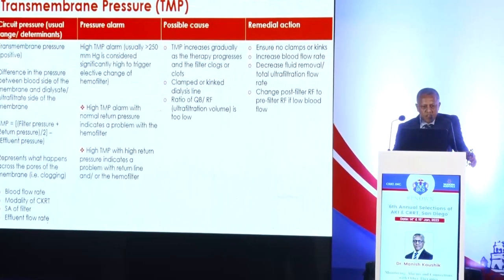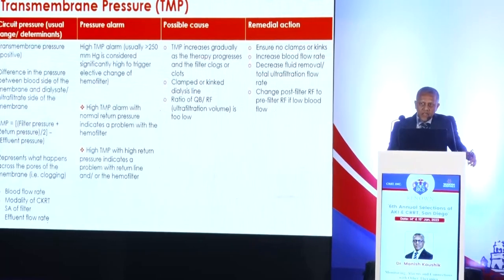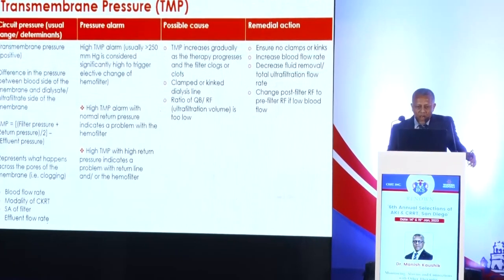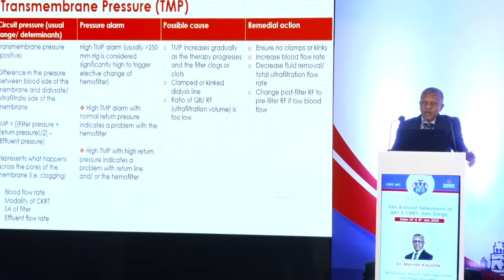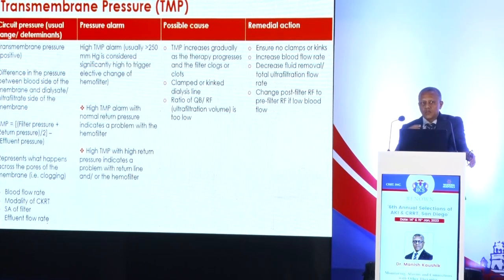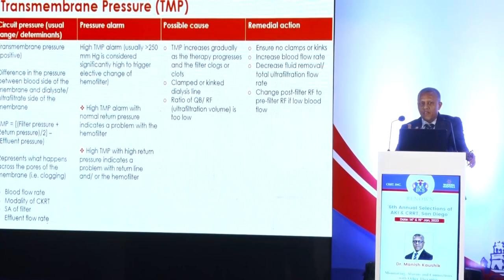Transmembrane pressure is the difference in pressure between the blood side and the dialysate or ultrafiltrate side of the membrane, representing what is happening across the pores of the filter. Major determinants include blood flow rate, modality of dialysis, filter surface area, and effluent flow rate. A progressively increasing transmembrane pressure beyond 200–250 mmHg suggests that pores are essentially all clogged. To generate the desired convective flow becomes very difficult, and some fibers may be clotting, reducing the effective surface area available to deliver the prescribed dose.